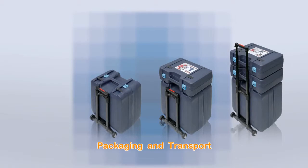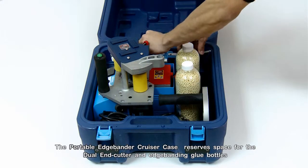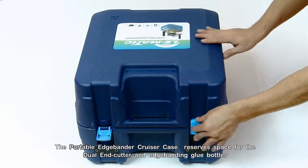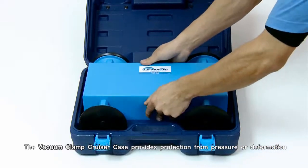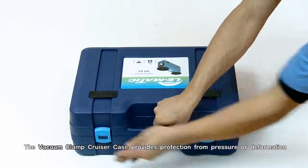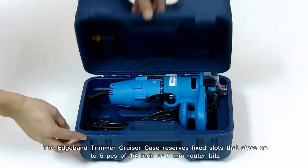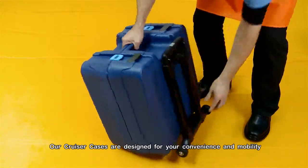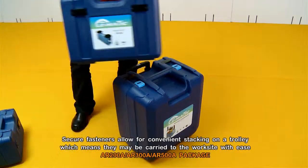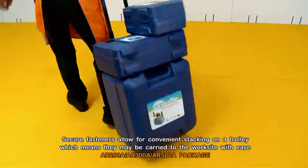Packaging and Transport. The Portable Edge Bander Cruiser Case reserves space for the dual end cutter and edge banding glue bottles. The Vacuum Clamp Cruiser Case provides protection from pressure or deformation. The Edge Band Trimmer Cruiser Case reserves fixed slots that store up to 5 pieces of quarter inch or 6mm router bits. Our Cruiser Cases are designed for your convenience and mobility. Secure fasteners allow for convenient stacking on a trolley which means that they may be carried to the work site with ease.